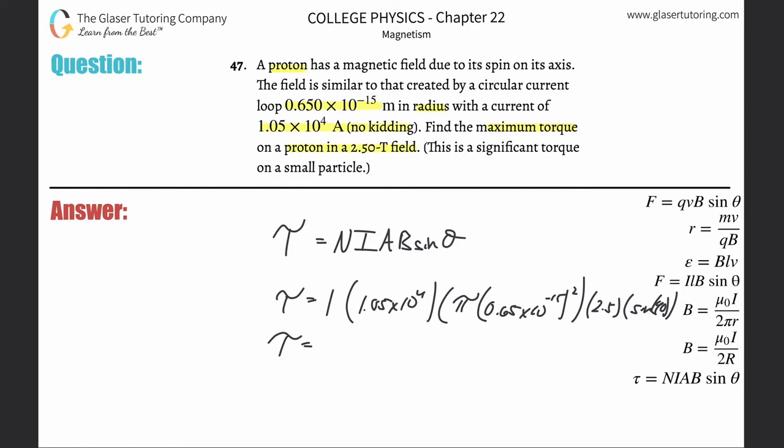So just plug it in: 1.05 × 10^4 × π × (0.65 × 10^-15)² × 2.5, and we get a value here of about 3.48 × 10^-26 newton meters, and that's that.